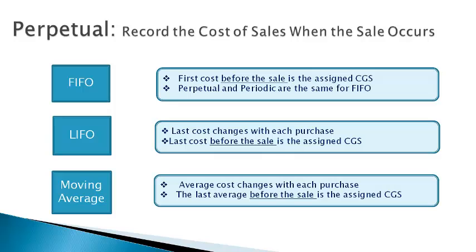The perpetual method uses a moving average to determine the cost of inventory just before the sale. A new moving average is determined after each purchase. The cost of the sale is recorded at the last moving average, and a sale does not change the moving average.